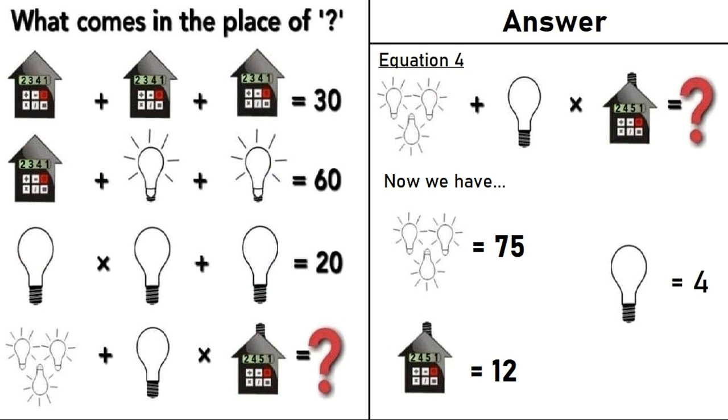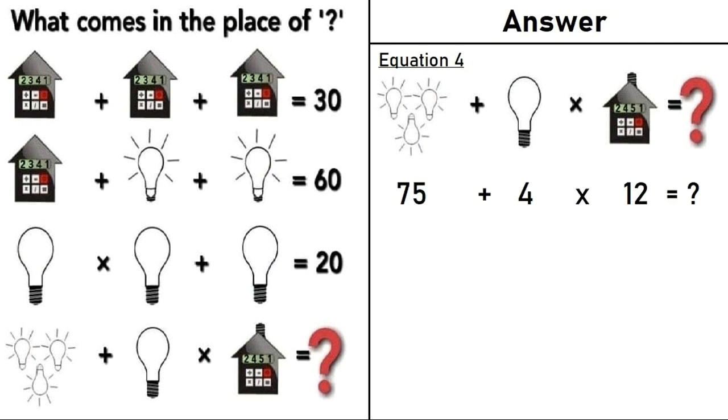Now we have 3 bulbs with lights equals 75, a bulb equals 4, house in equation 4 equals 12. Putting all the values in equation 4, we have 75 plus 4 times 12. Now we will apply BODMAS. First we do the multiplication and then the addition. So 75 plus 48 is equal to question mark.